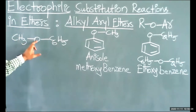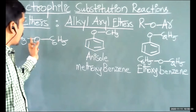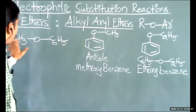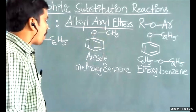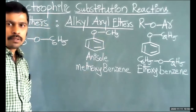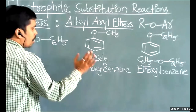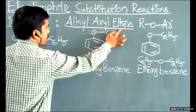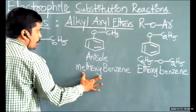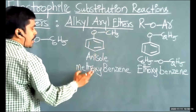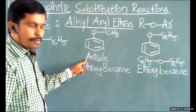The compound CH3–O–C6H5 can be represented as a benzene ring with a single bond to O, then single bond to CH3. This compound is called anisole — a very important compound. Its IUPAC name is methoxybenzene, where the CH3O group (methyl + oxy = methoxy) is the substituent on the benzene ring.